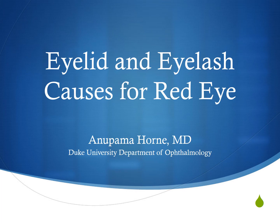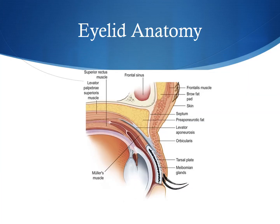Hello, today we are going to review some common eyelid and eyelash causes for red eye. First, let's go over a little bit of eyelid anatomy. What I'd like you to pay attention to here is where the meibomian glands exit at the lid margin near the eyelashes.